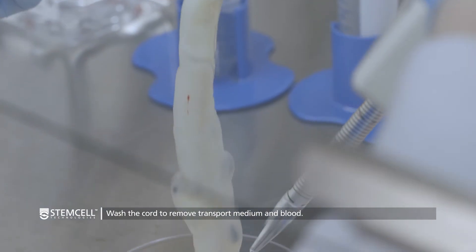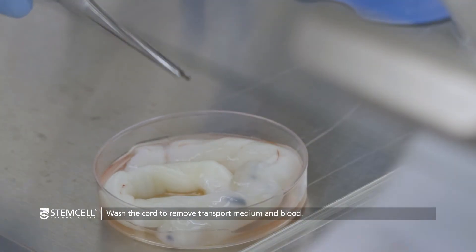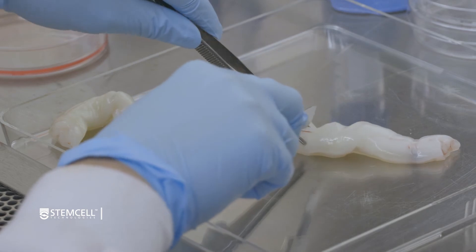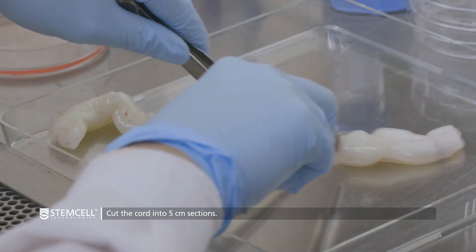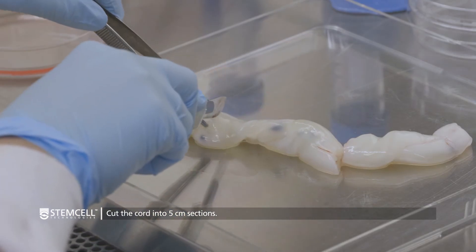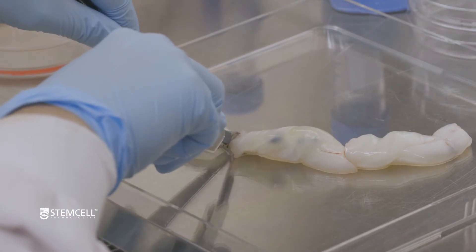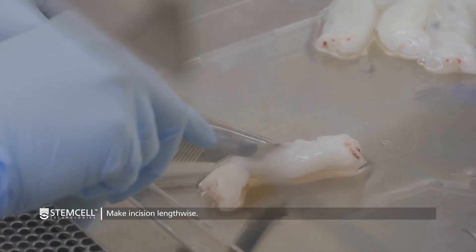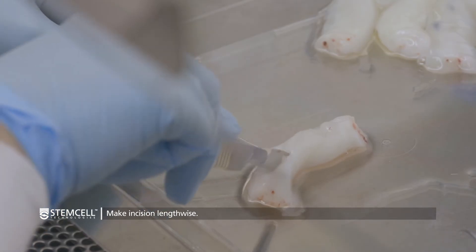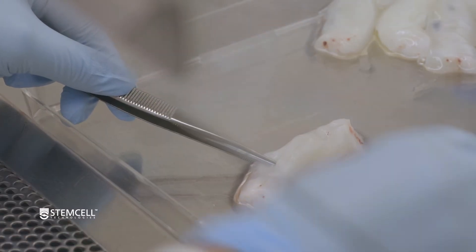Wash the cord with PBS to remove transport medium and blood. Cut the cord into roughly 5-centimeter sections using the scalpel to make it easier to handle. Make a shallow incision lengthwise in one 5-centimeter section, being careful not to cut into the vessels.